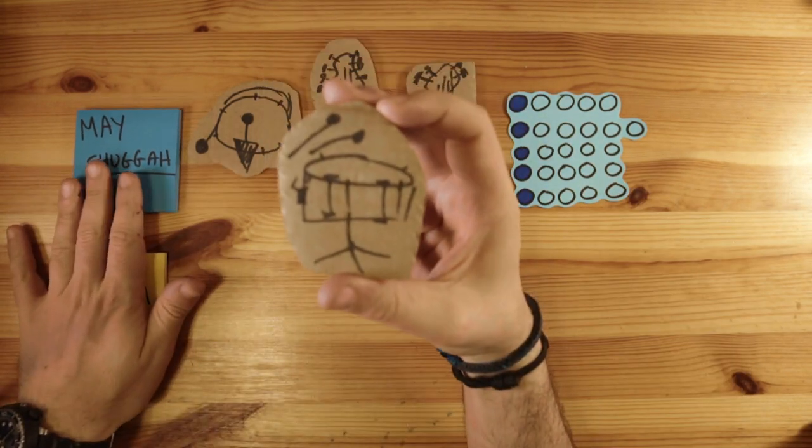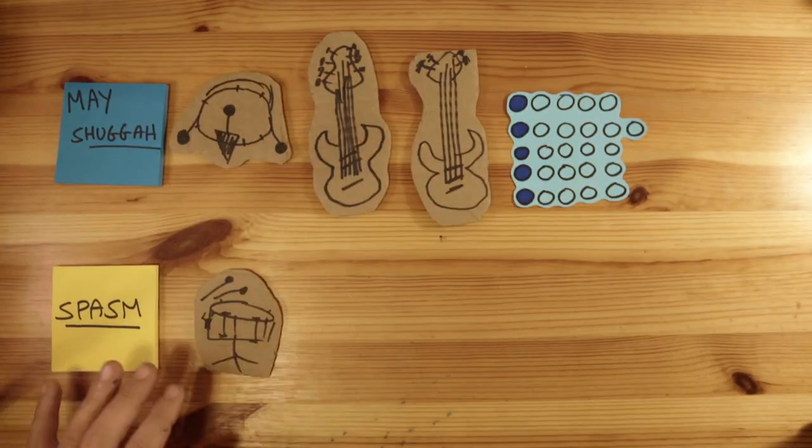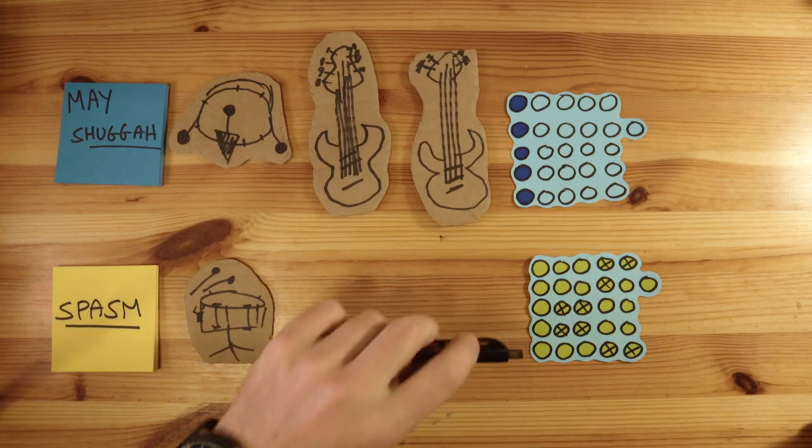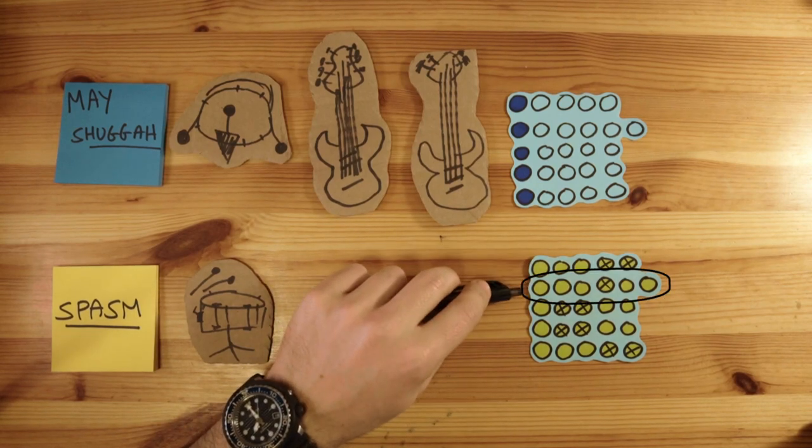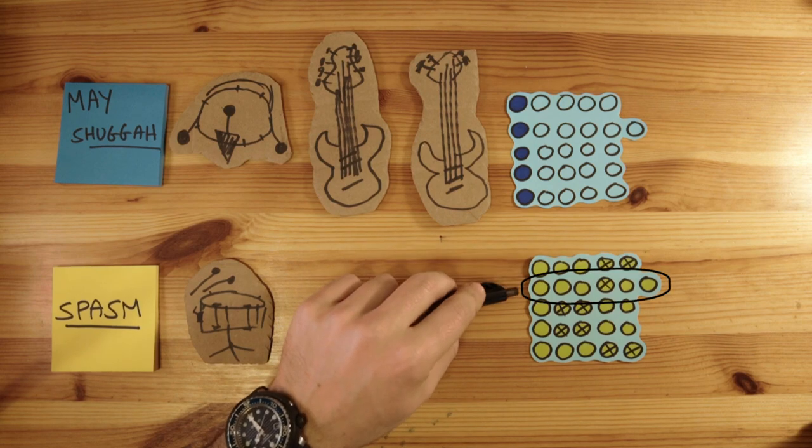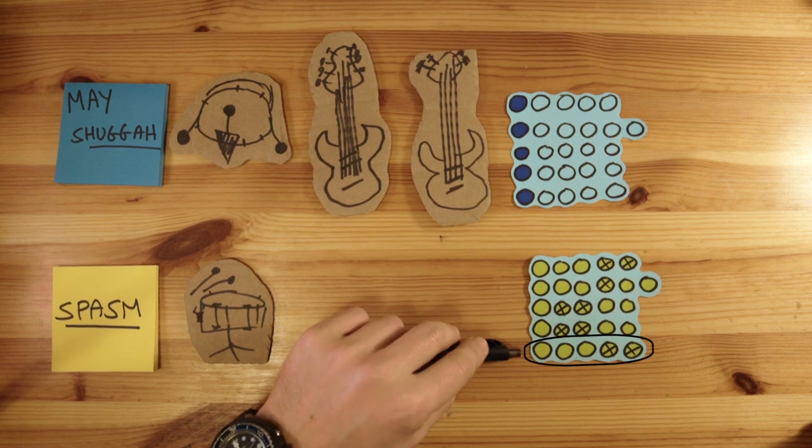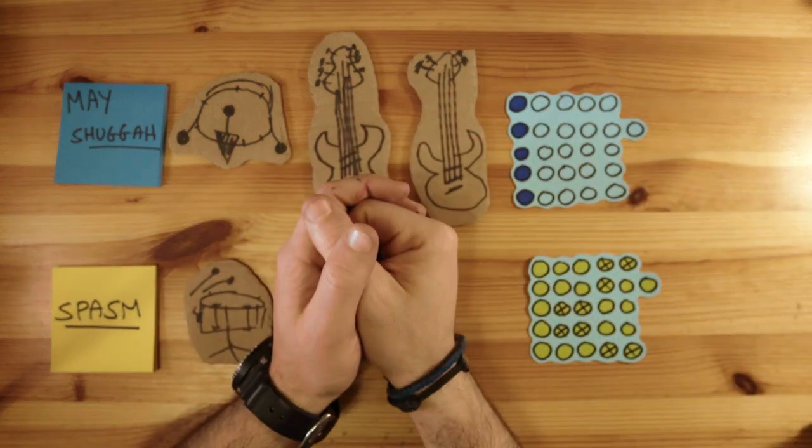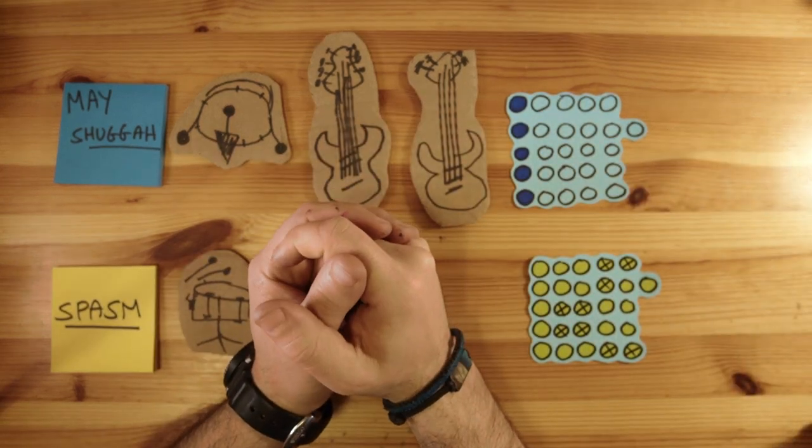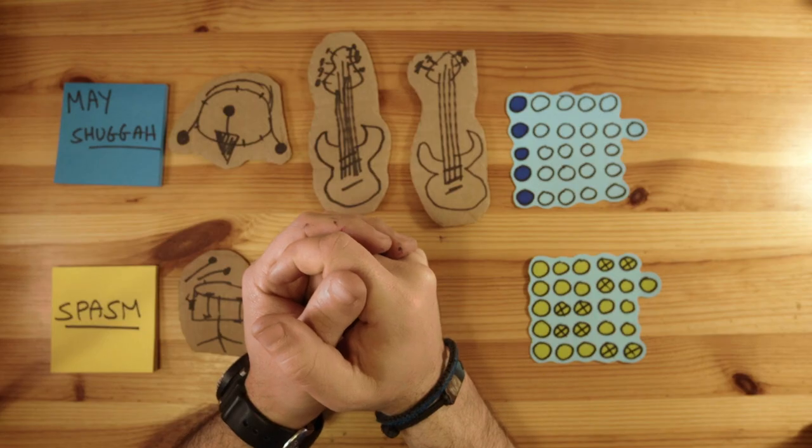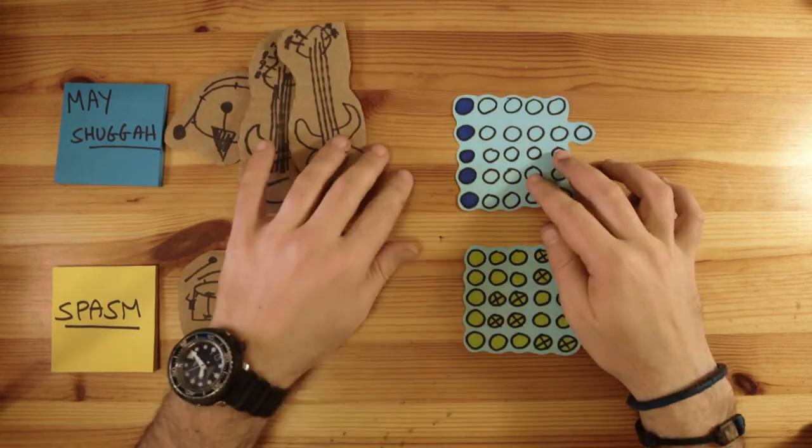Now over that, Thomas plays all 16th notes on the snare drum, accenting these specific hits. This together with this creates a super disorienting, some might say spasmy - oh, that's why they call it that - groove that sounds awesome, especially when repeated.